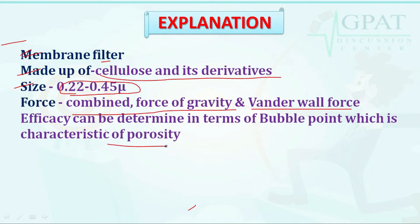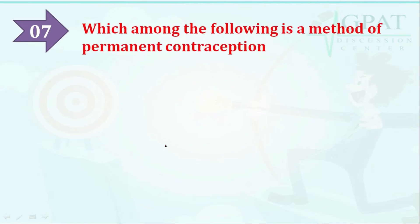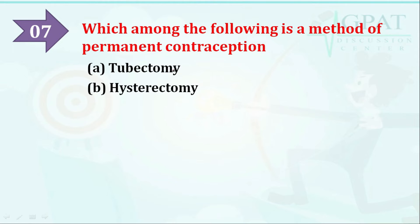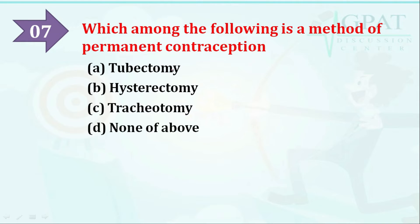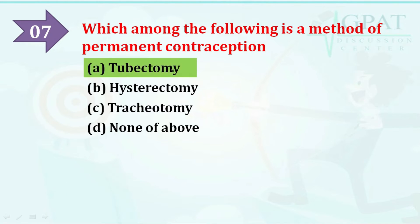The next question: which of the following is a method of permanent contraception? Options are: option A: tubectomy, option B: hysterectomy, option C: tracheotomy, option D: none of the above. The correct answer is tubectomy. Tubectomy is a method of permanent contraception.